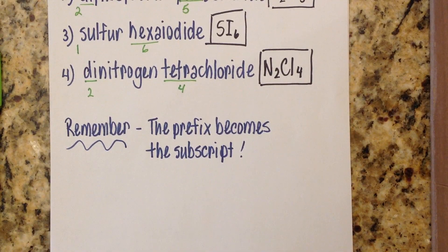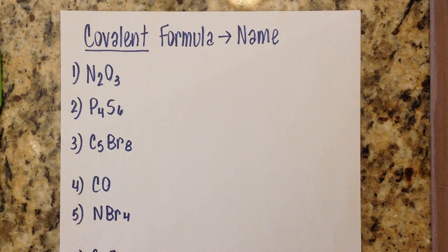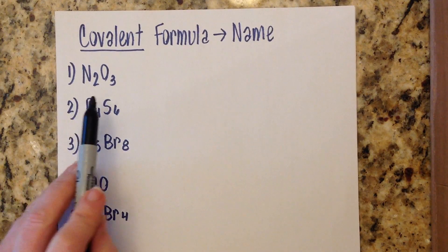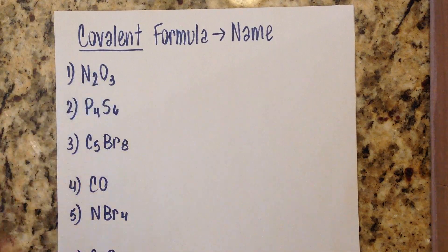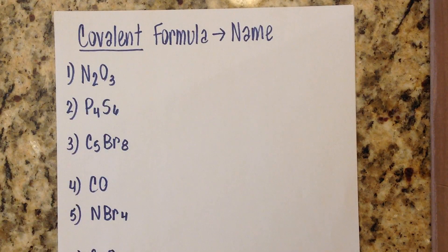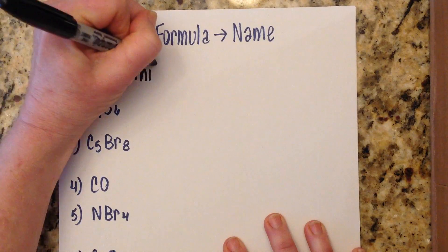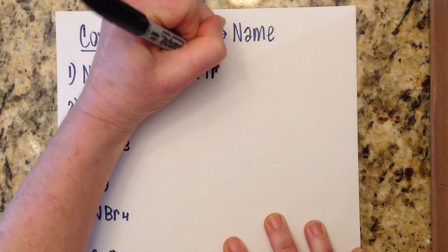Now let's go the other way — turning a formula into a name. This is not hard, it's just more writing. Watch what I'm pointing to: N2O3 is dinitrogen trioxide. Di is two nitrogens, tri is three oxygens. The last word ends in IDE; the first word doesn't change. Dinitrogen trioxide.